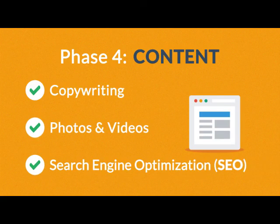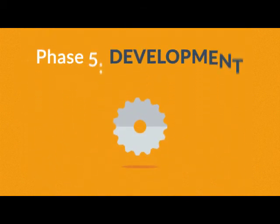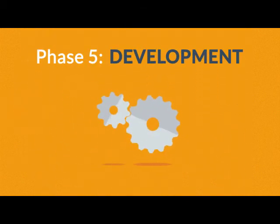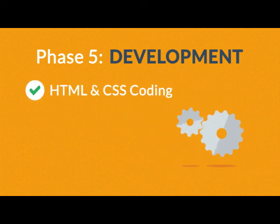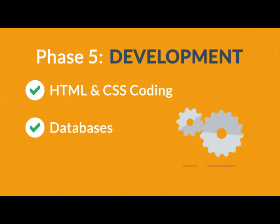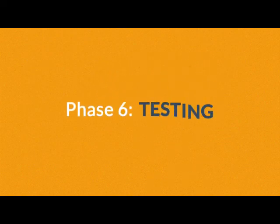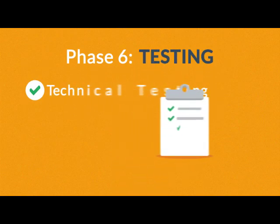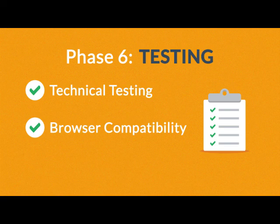Phase five: development. Here we actually create the website using HTML (Hypertext Markup Language) and CSS (Cascading Style Sheets), with some help from databases and other technologies as well if needed. Our websites can also be made accessible to mobile devices. Phase six: testing. We test all the technical features like code, scripts, and compatibility with major browsers.